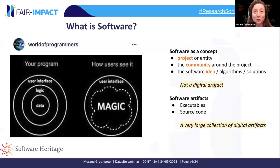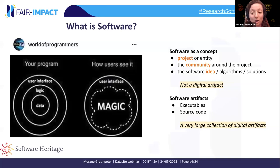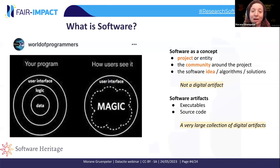What is software? Most users look at software as magic — something that happens everywhere, on your phone, on your computer. In research, you might use software without knowing what's really happening behind it. But software is the logic between what humans are capable of doing with it and the data. Software is both a concept and a project that can have a community around it. It has digital artifacts — executables and source code — which form a large collection of digital artifacts.